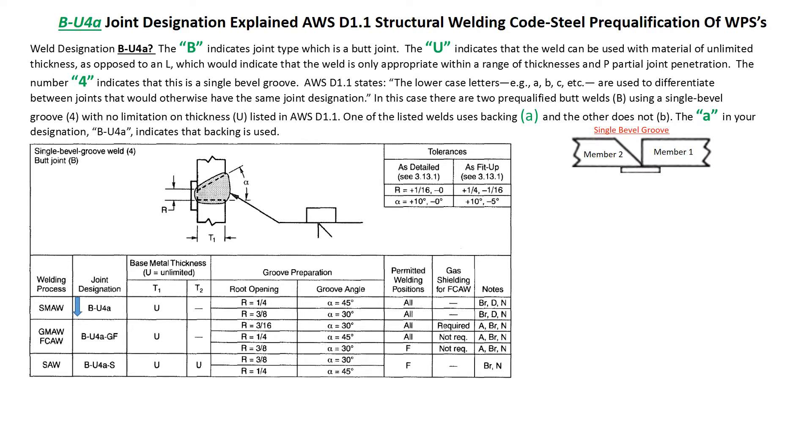Following the B is the letter U, which indicates that the weld can be used with material of unlimited thickness, as opposed to the letter L, which would indicate that the weld is only appropriate within a range of thickness.